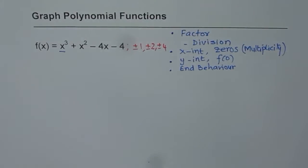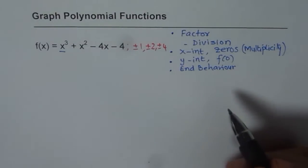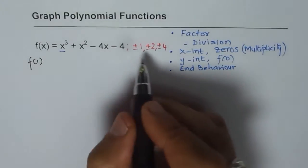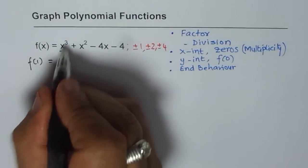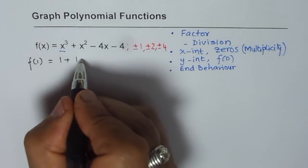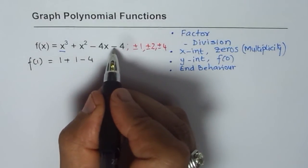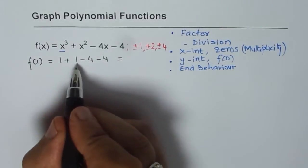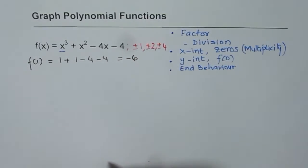Let us begin with the very first one. At times you may have to try all of them. But let us try with the very first one. f(1) = 1³ + 1² - 4(1) - 4 = 1 + 1 - 4 - 4. So what do I get? I get 1 plus 1 as 2 and these are minus 8. So I land up with minus 6. So 1 doesn't work for me.